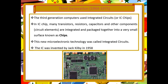The IC chip contains a lot of electrical circuits — transistors like those used in the second generation computers — all packed together into a very small circuit called an IC chip. This new micro-electronic technology was called integrated circuits, and the IC was invented by Jack Kilby in 1958.